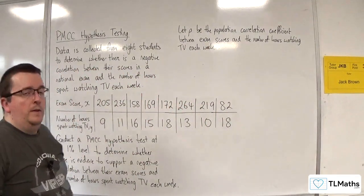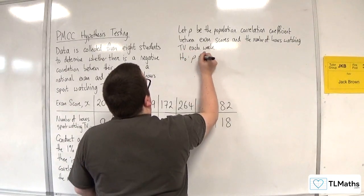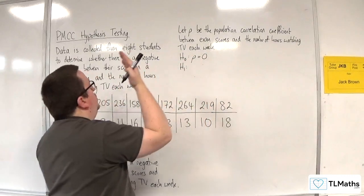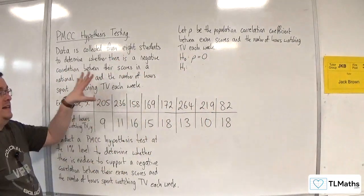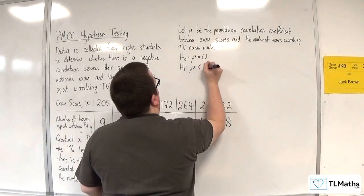So we need to write that down first. Then we've got the null hypothesis, H0, which is always rho equals 0. And we've got the alternative hypothesis, which this time we're looking at a negative correlation, and so we're looking for rho being less than 0.